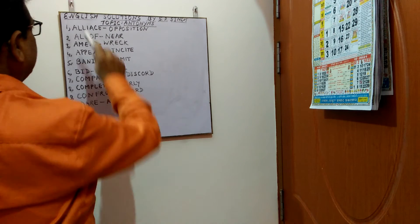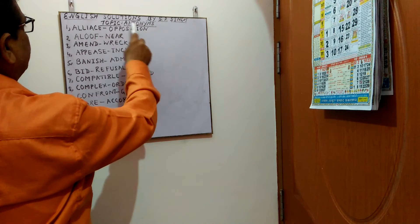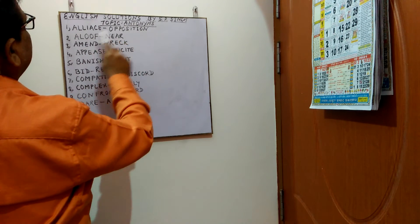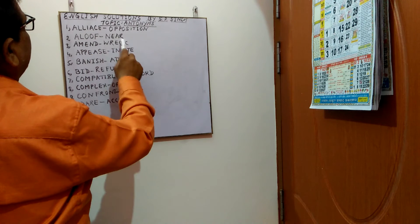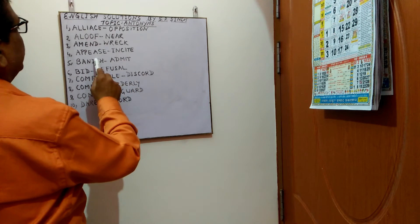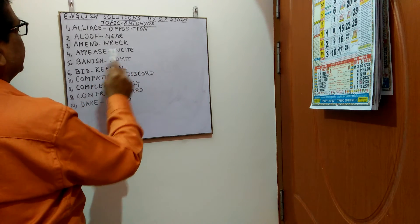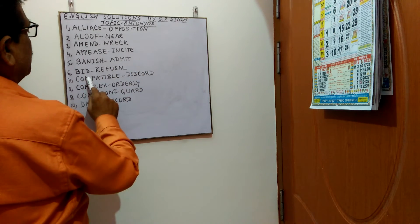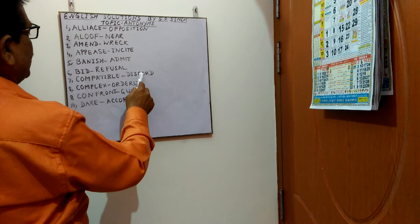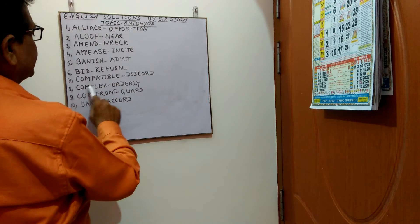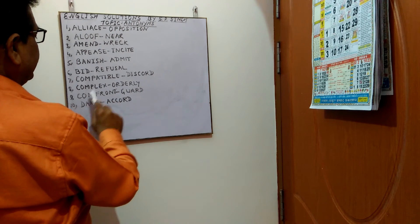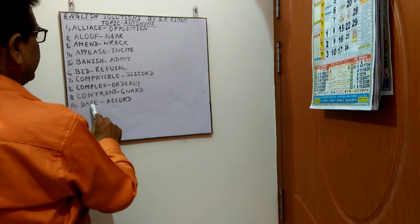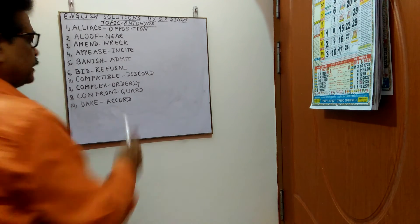Again repeating: alliance - opposition, aloof - near, amend - wreck, appease - incite, banish - admit, bid - refusal, compatible - discord, complex - orderly, confront - guard, dare - accord.